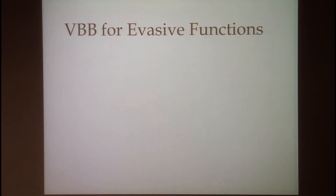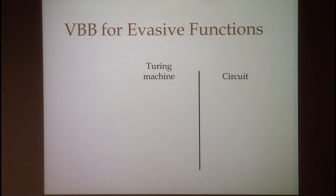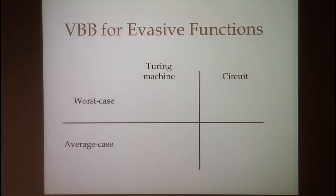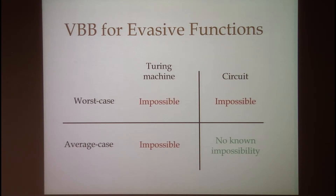The definition of VBB comes in a few different flavors. We can consider obfuscating Turing machines or circuits — obfuscating Turing machines will always be more difficult. We can also distinguish between worst case and average case notions. Worst case obfuscation means we want security for every single function in the family, whereas average case obfuscation only requires security for a randomly chosen function. In the paper we show that the impossibility result of Barak et al. does extend to evasive functions for all of these notions except average case obfuscation for circuits, so that will be the notion we consider for the rest of this talk.